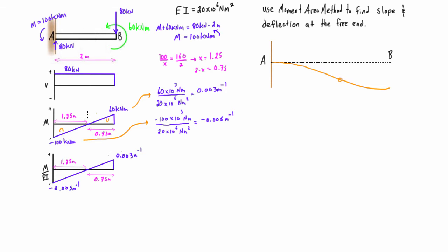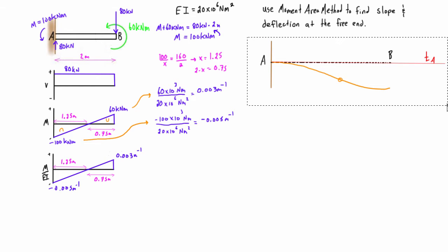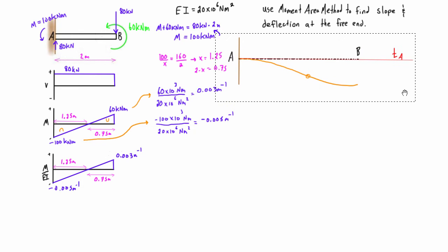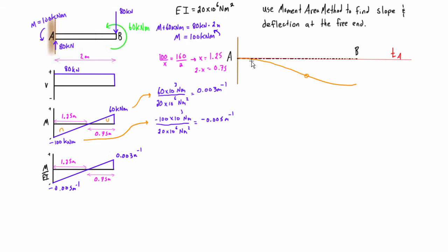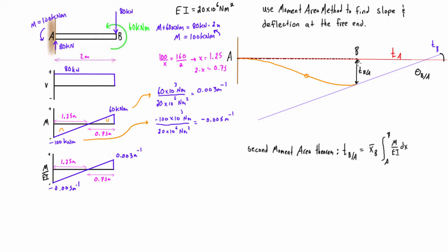We'd have that inflection point at about 1.25 meters. Drawing the tangent at point A is ideal because at this rigid connection, the slope in the deformed structure is still horizontal. This lets us base our relative slope calculations off the horizontal, which gives us the actual slope at B. For tangential deviation, we draw the tangent at B, and the angle we get is theta B with respect to A.